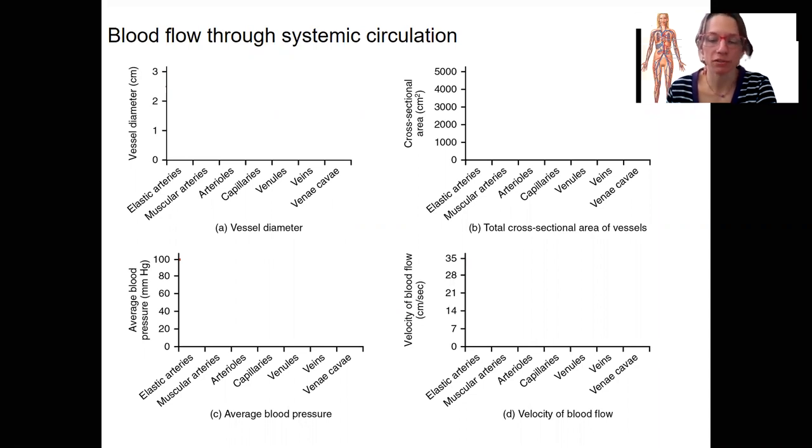So let's graph these various factors here: vessel diameter, blood pressure, cross-sectional area, and velocity of blood flow across circulation. Your book has these same images and will be, it's a nice color coding with red and blue. I'm not going to try to do that, so I'm just going to do this in green.